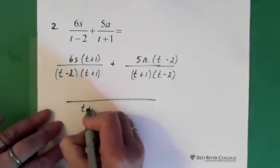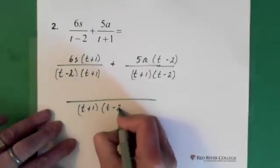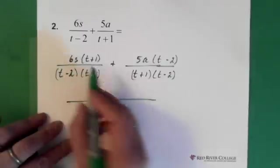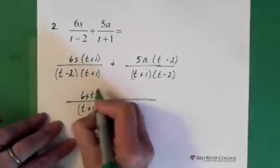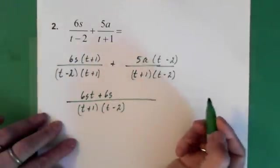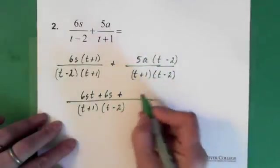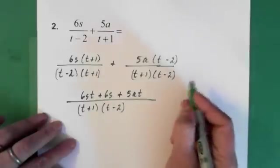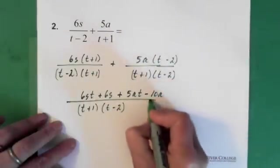So we have t plus 1 times t minus 2. And up here, we have 6st. So 6s is multiplied by the t. And then 6s times the 1. So plus 6s. And then we would add it to what's happening here. So 5at minus 10a.